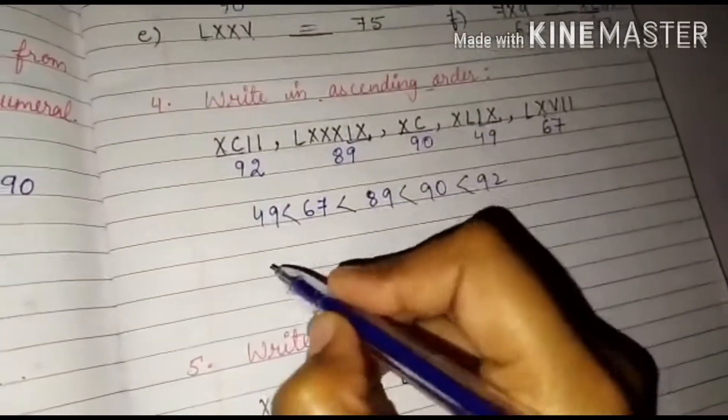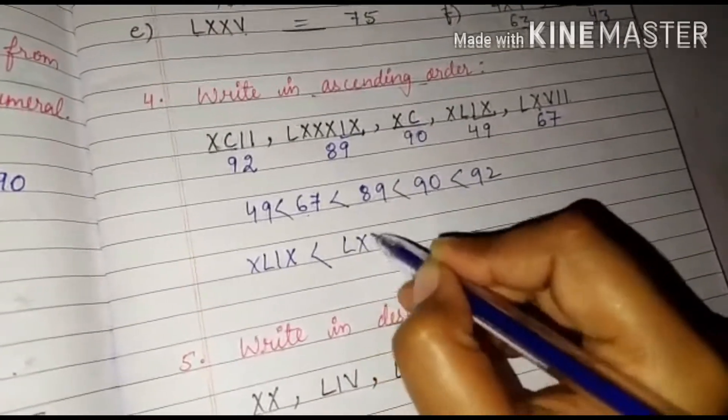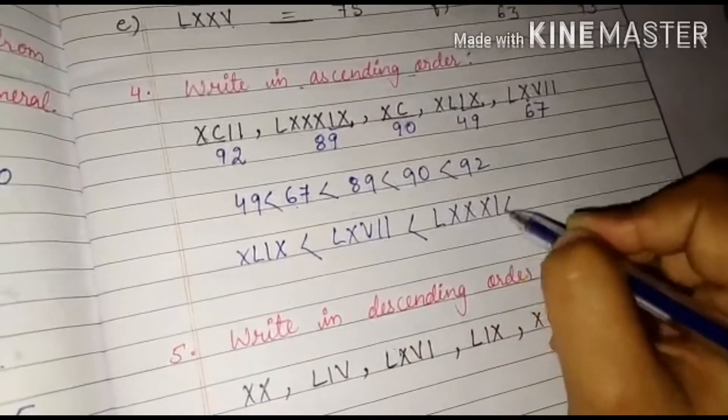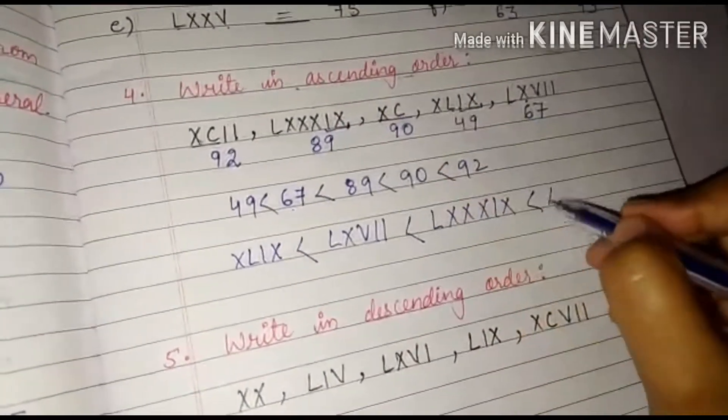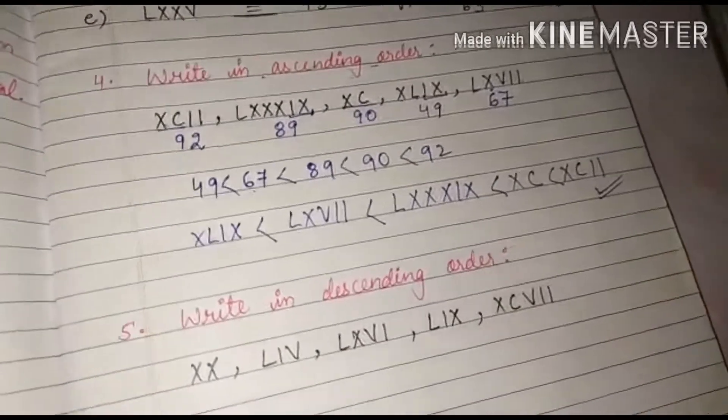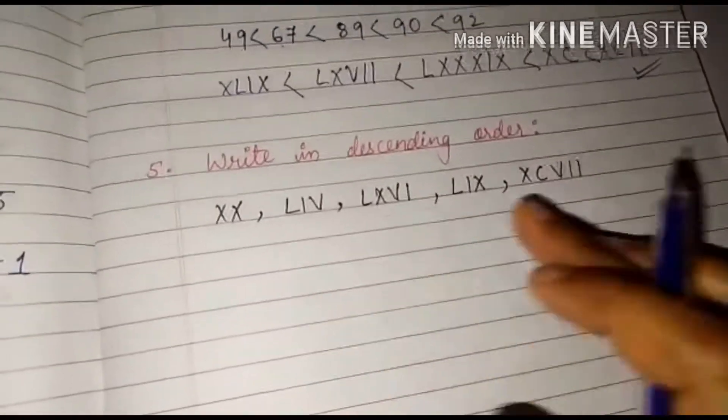So what is 49? It is XLIX. Less than 67 is LXVII. And 89 will be LXXIX. 90 will be XC and 92 will be XCII. In this manner you will be able to write the ascending order or in the same manner we will write in descending order.